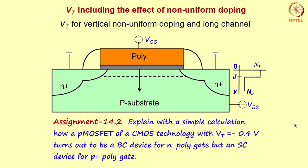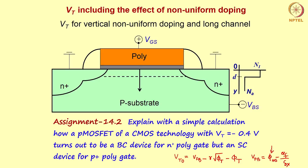Consider what happens with an N+ polygate versus a P+ polygate. The threshold voltage expression without body effect parameters is Vt0 = Vfb + γ√φt + φt for N-channel; for a P-channel device the positive signs are replaced by negative signs. The flat band voltage is φms - Qf/Cox, and it is the φms term that changes depending on whether the gate is N+ poly or P+ poly.